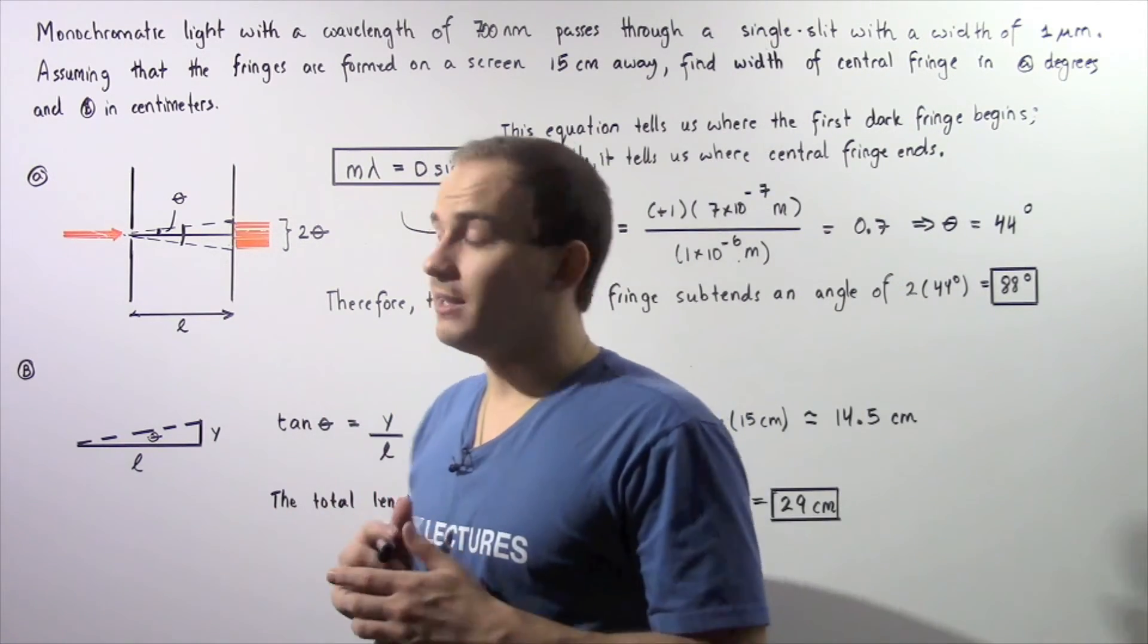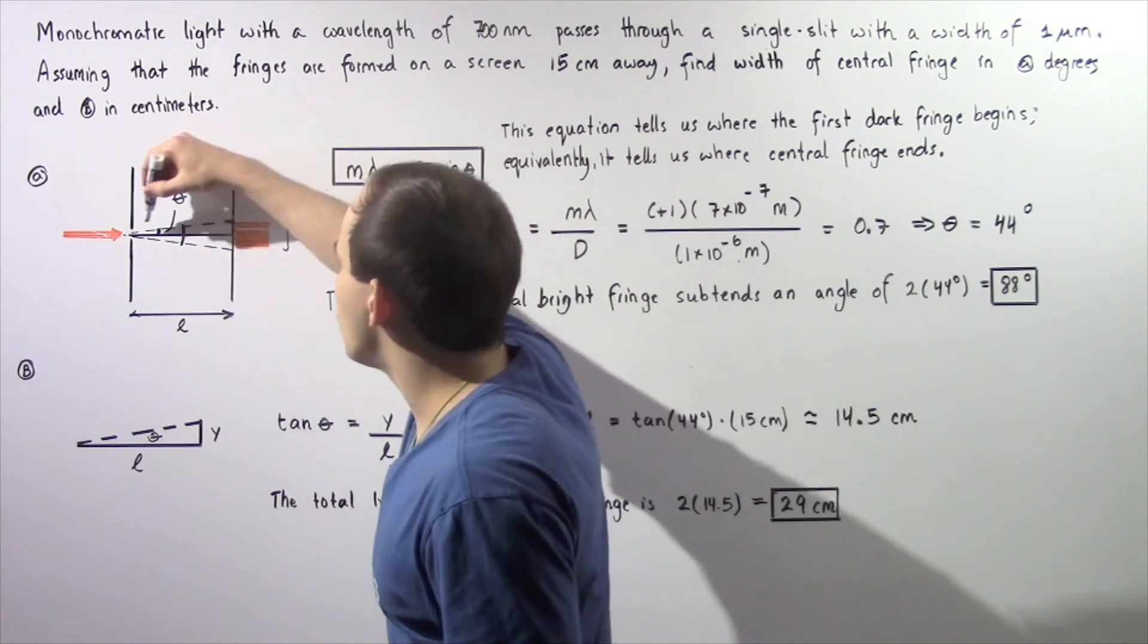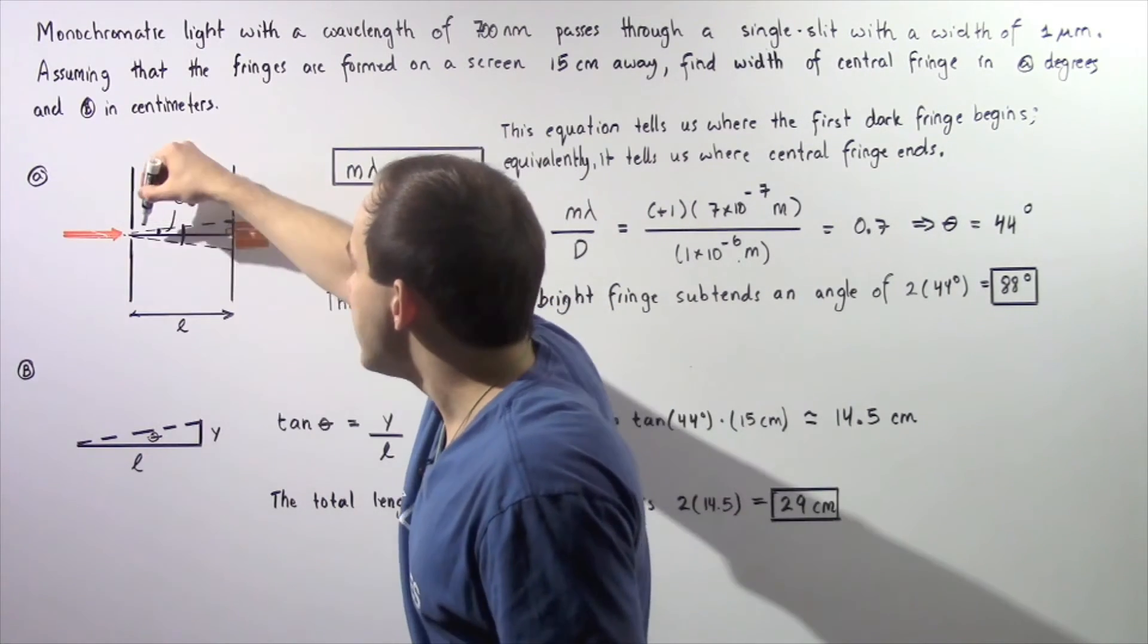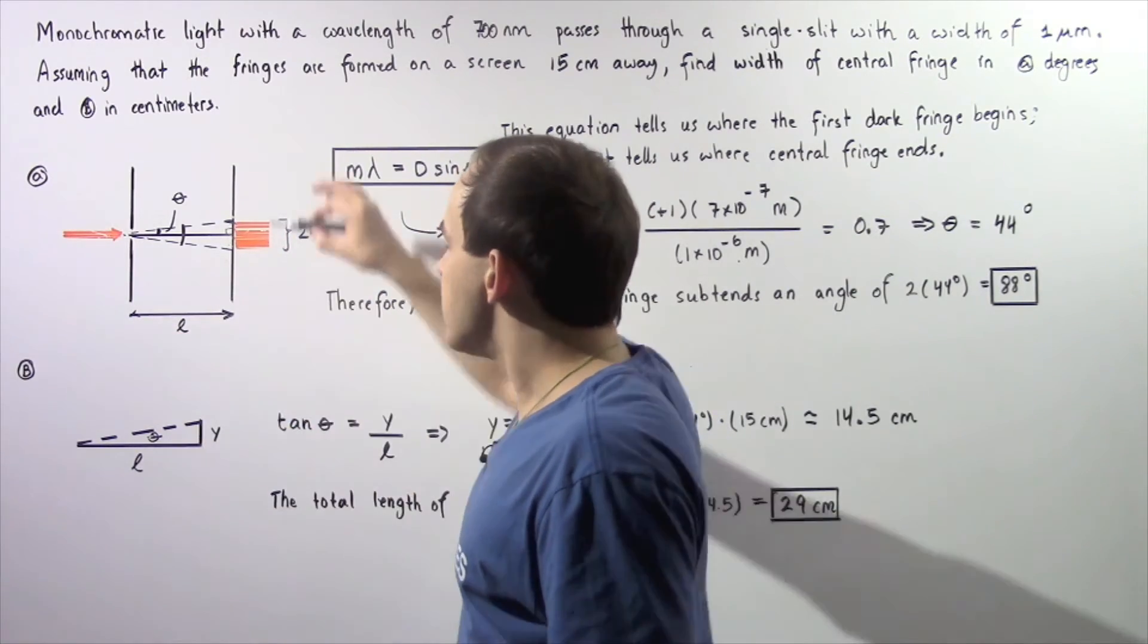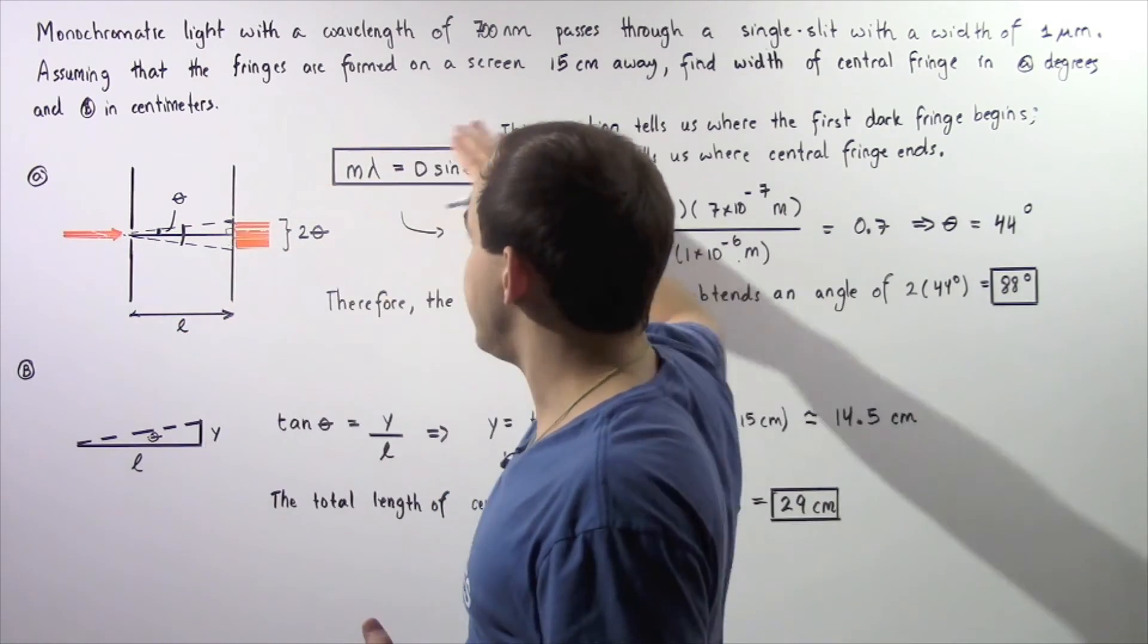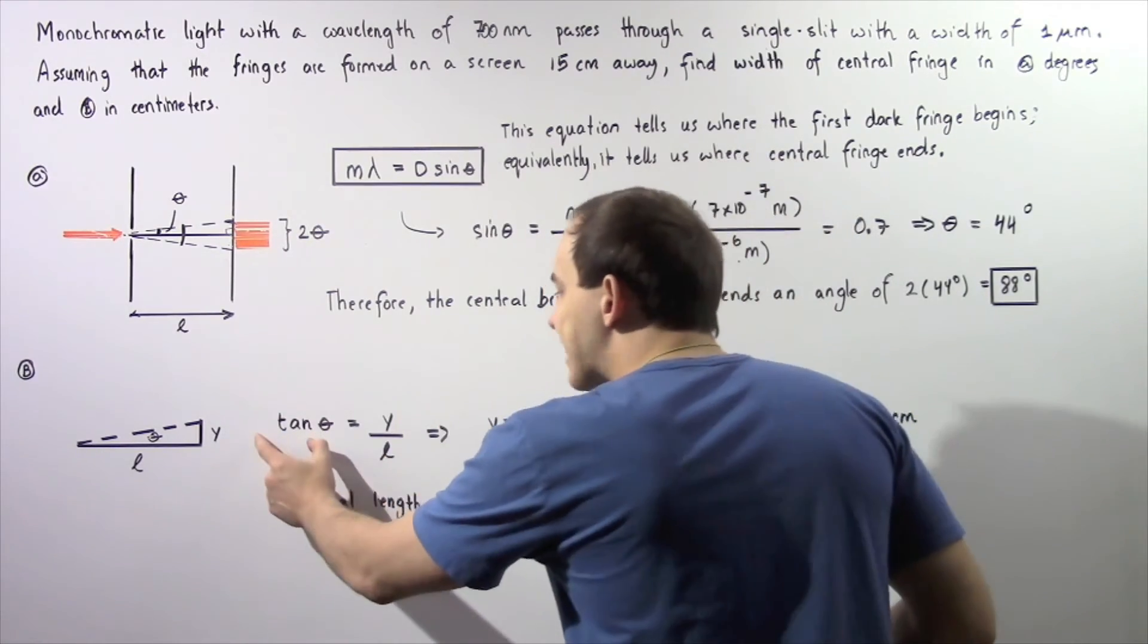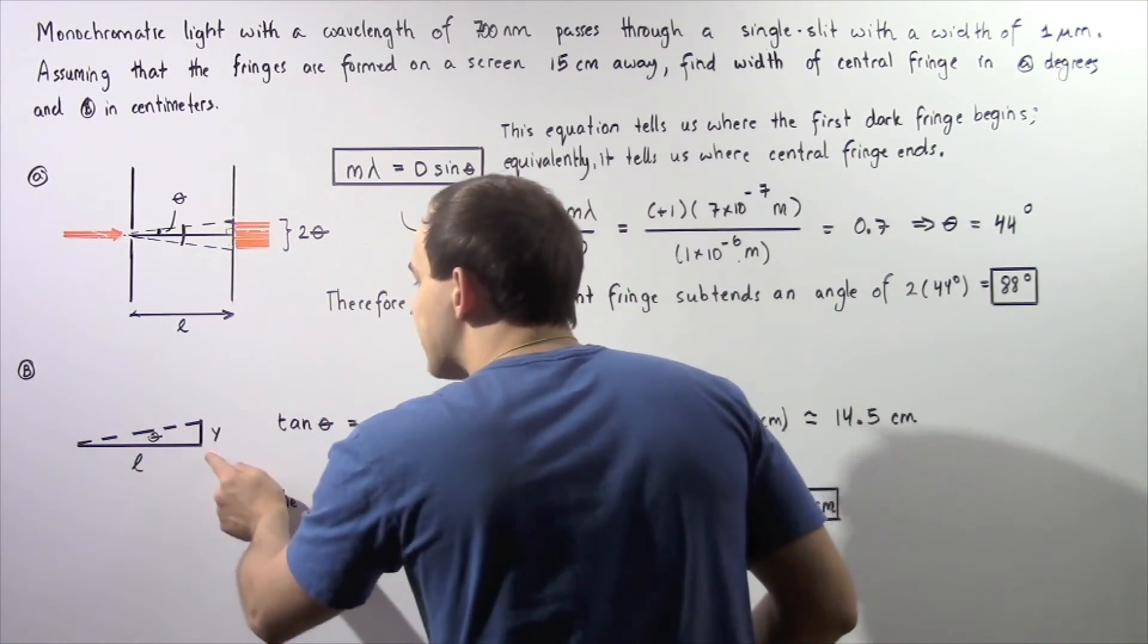Now in part B we want to calculate this distance in centimeters. We're going to use this right triangle. We know that the base of our right triangle is the distance L. The height is let's say that's y and the angle was calculated in part A to be theta.